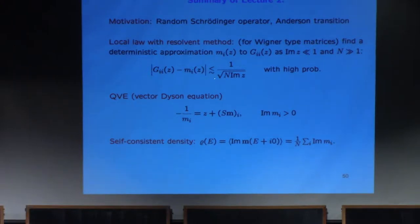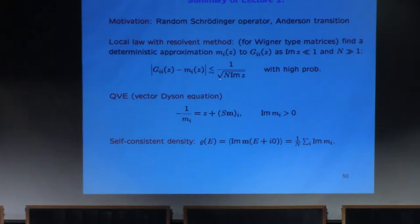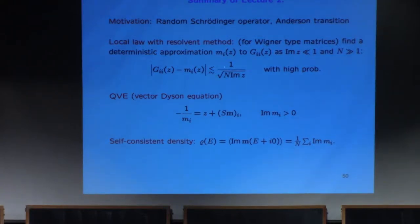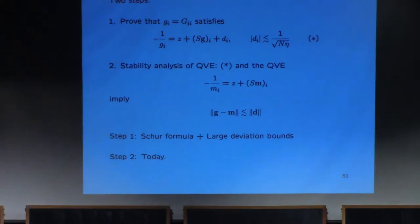The error term d_i, with very high probability, behaves like 1 over sqrt(N*eta) - exactly the same precision that we want to reach. These bounds are understood with a grain of salt: they hold with very high probability, not almost surely, because sometimes the resolvent with very small probability can behave crazily. There is also a tolerance factor - instead of exactly 1, there should be a slowly growing factor like N^epsilon for any positive epsilon, but we compress all these subtleties into this notation.